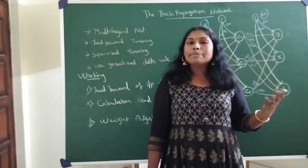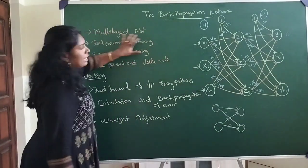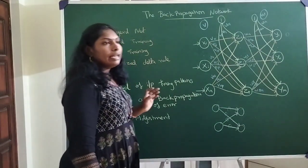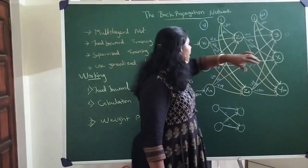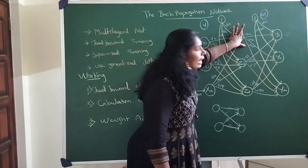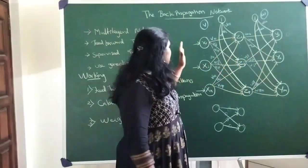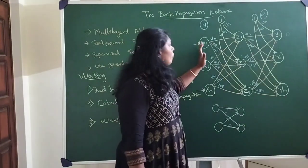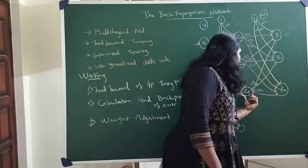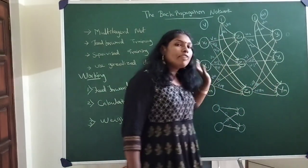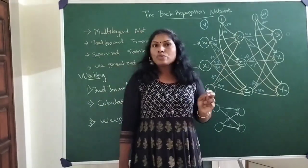That is one advantage we are going to have when we have multiple layers in a neural network structure. The backpropagation network is a multi-layer network and it is a feed-forward network for training. Feed-forward denotes it is a unidirectional structure: from X1, the data flows to the hidden layer, and from the hidden layer to the output layer. We send the input, calculate the output of each and every hidden layer neuron, which is then passed from the hidden layer to the output layer. This is called feed-forward of input.